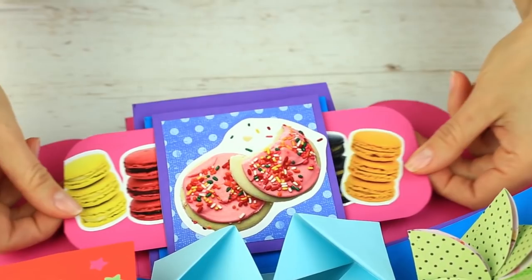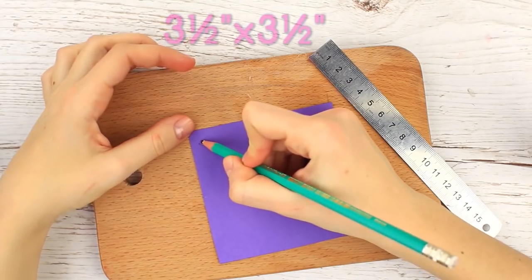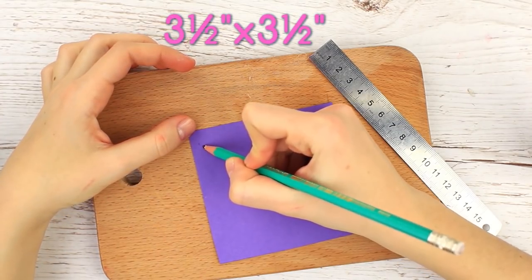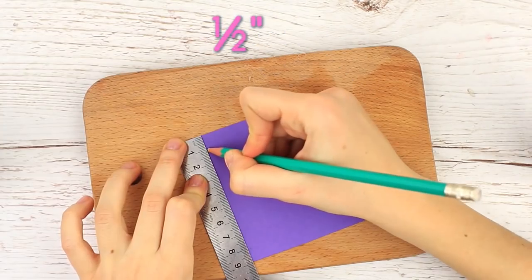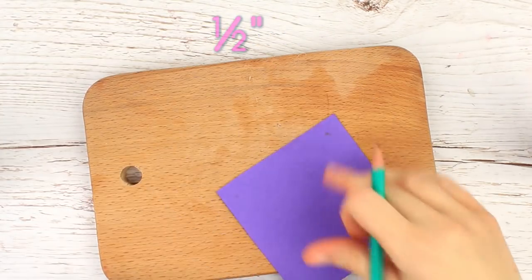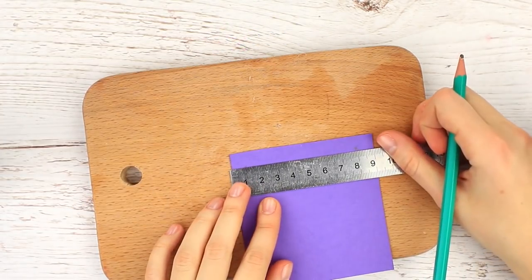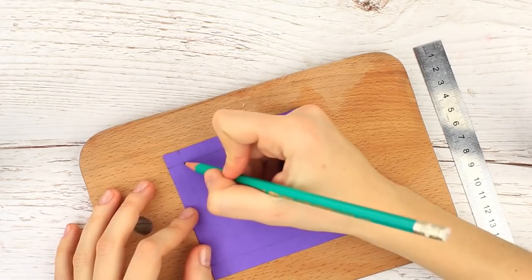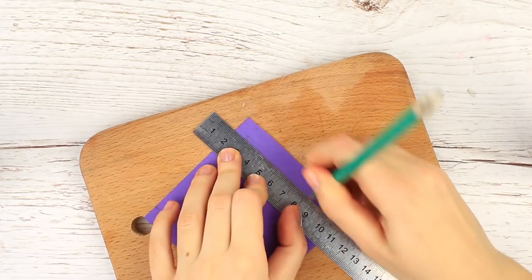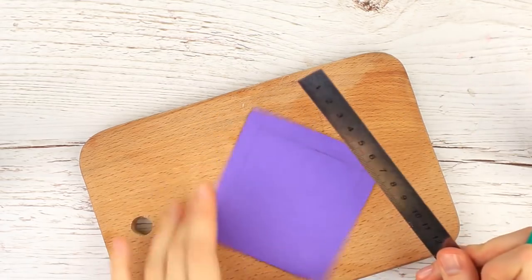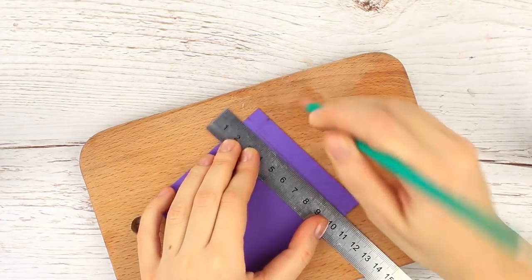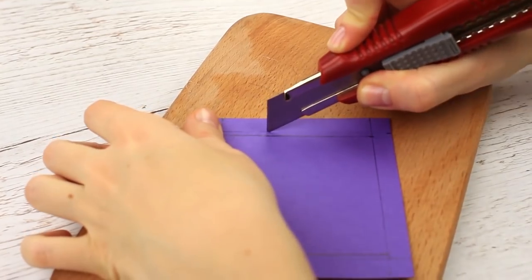To continue the confectionery theme, let's make a macaroon and donut double slider card. Take a 3 1⁄2 inch by 3 1⁄2 inch colored cardboard. Mark a 1⁄2 inch border around all four sides of the paper. Connect the marks. Measure and mark 1 16th inch along one border. Repeat for the opposite side. Cut out the narrow strips.